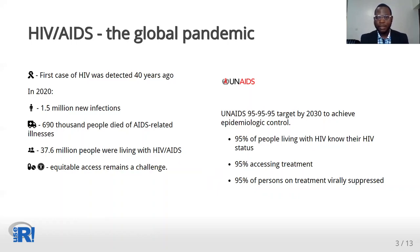While remarkable progress has been recorded in the last decade, inequity between and within countries continues to drive the epidemic. Though some countries have attained epidemic control, many are off track, with COVID-19, conflict, and humanitarian emergencies reversing the gains. UNAIDS set the ambitious target to achieve epidemic control of HIV AIDS by 2030 through identification of at least 95% of persons living with the virus, retaining 95% of those identified on treatment, and achieving viral suppression in at least 95% of those on treatment.